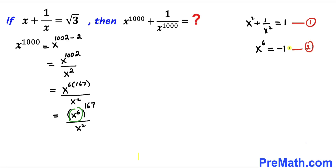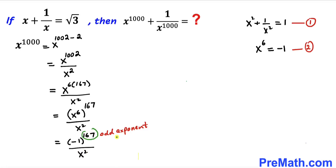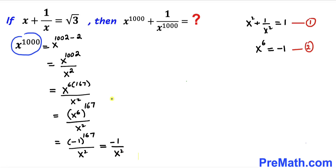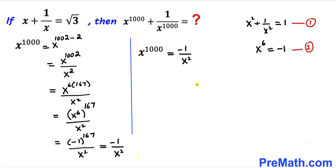Since x⁶ = -1, we replace x⁶ with -1, giving (-1)^167 / x². Since 167 is an odd exponent, (-1)^167 = -1. Therefore x^1000 = -1/x². Let's call this equation number 3.